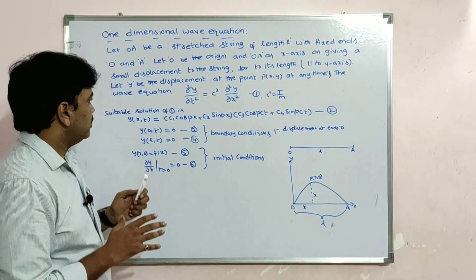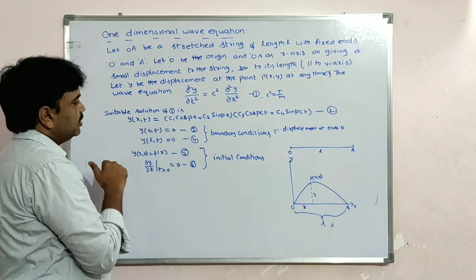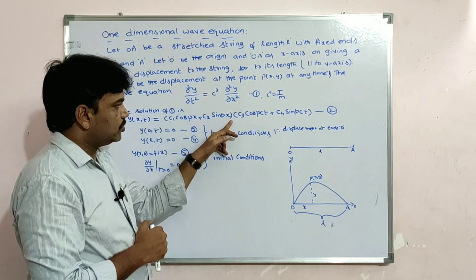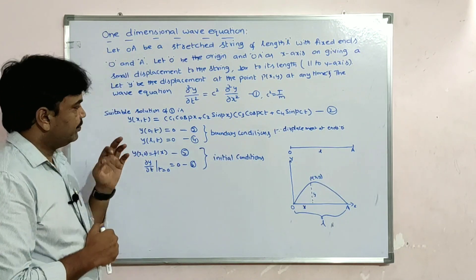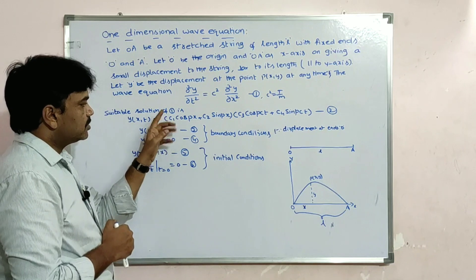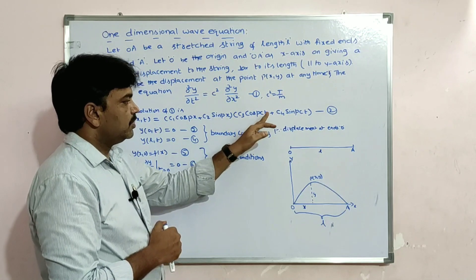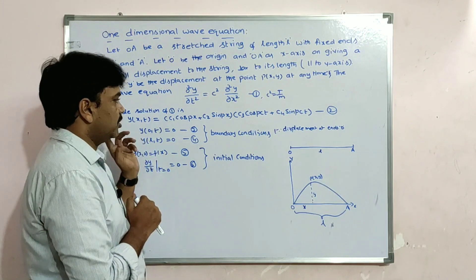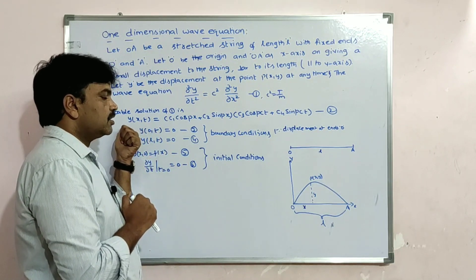The solution of this wave equation is: y(x, t) = (c1 cos px + c2 sin px)(c3 cos pct + c4 sin pct). Please remember this solution, because we use it throughout the entire wave equation problem.